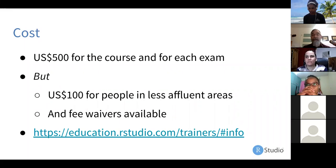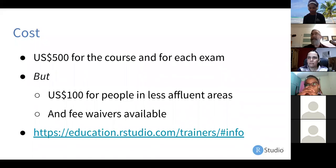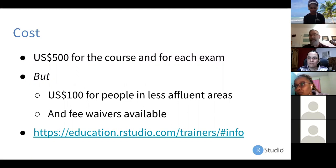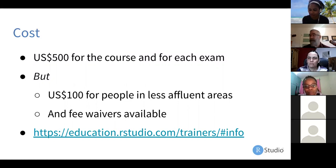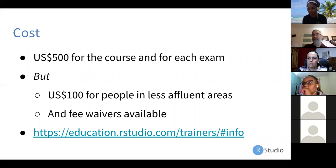What does it cost? Nominally it's $500 US for the course and for each exam, so the total is about $1,500. However, it's $100 for each item for people in less affluent areas, and we are giving complete fee waivers to many people. $1,500 for certification would put it out of reach of far too many people. When you fill in the form, you can tell us if you need a fee waiver and the reasons why — we're trying to be as generous as we can. You can find more information and the trainers directory at education.rstudio.com/trainers.